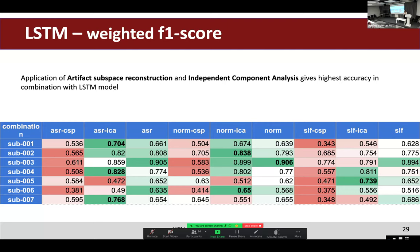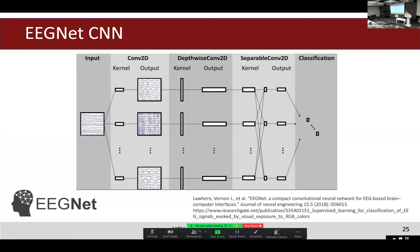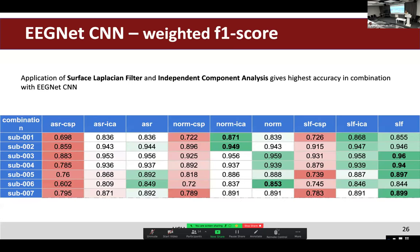Another questioner asks to explain how to read the accuracy tables, noting the presenter moved through them quickly. The presenter explains: each row and column represents combinations of signal processing, feature extraction, and algorithms. The first column shows Artifact Subspace Reconstruction with Common Spatial Patterns — and the questioner notes all CSP results appear red.